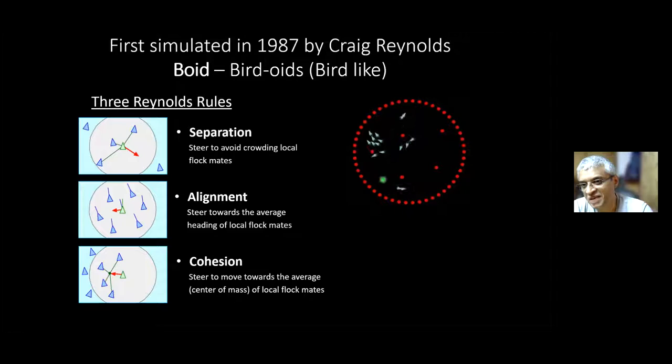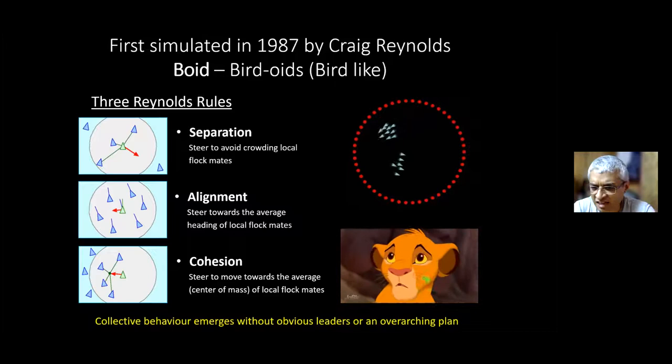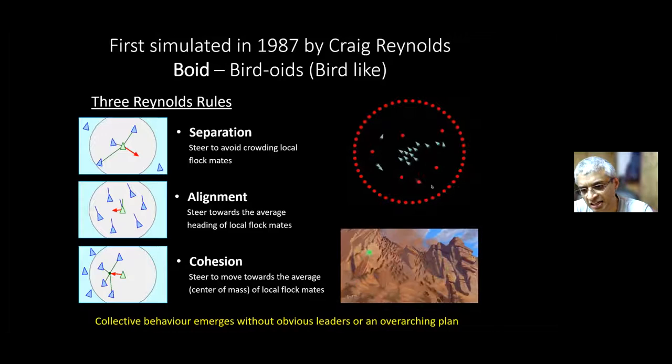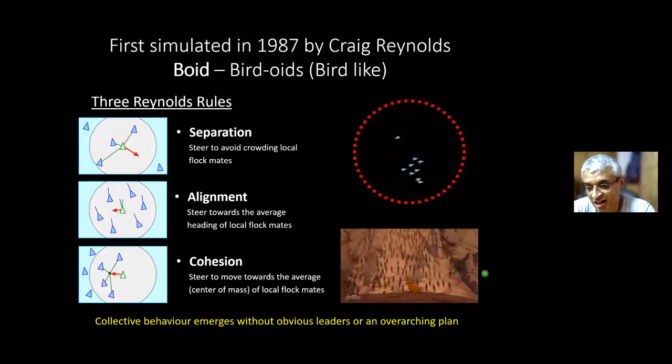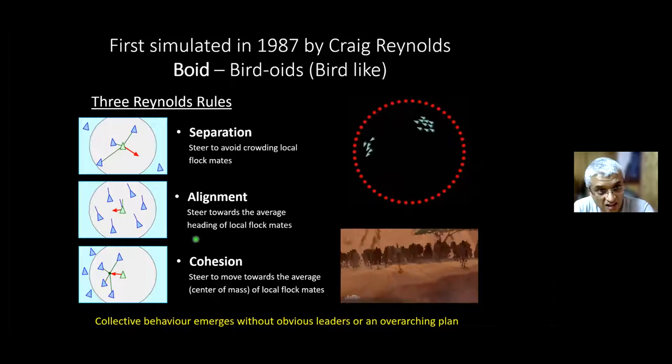These precise three rules were actually used in the movie The Lion King — the wildebeest herd animation was done entirely using Reynolds' rules. The key takeaway is that collective behavior emerges without obvious leaders or an overarching plan; it just spontaneously comes about in these systems.